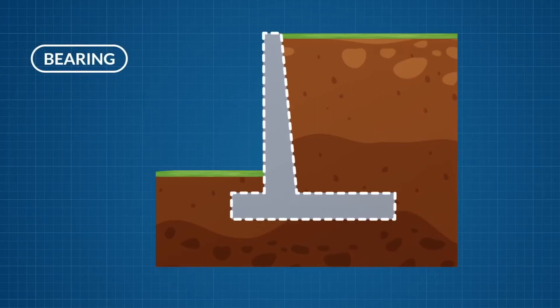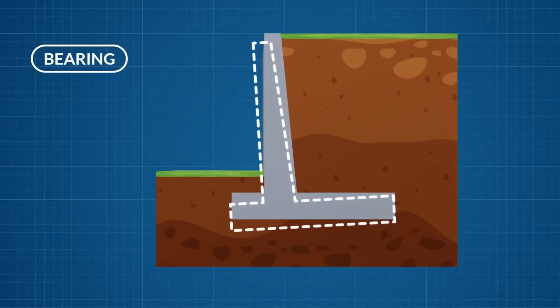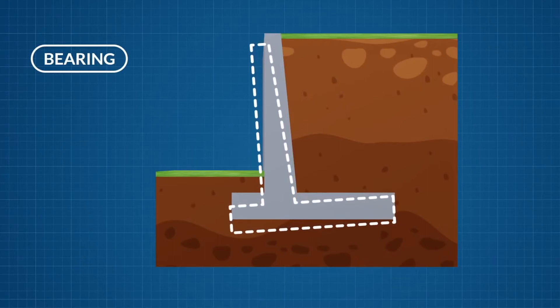The final type of failure considered is bearing failure. This bearing capacity is determined using the Terzaghi approach and more can be learnt in our video on bearing capacity. The length L is used to distribute the vertical reaction.